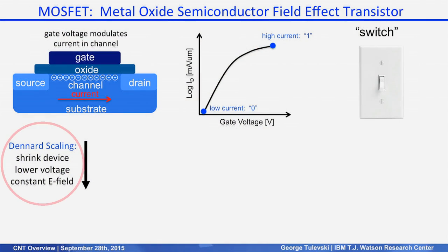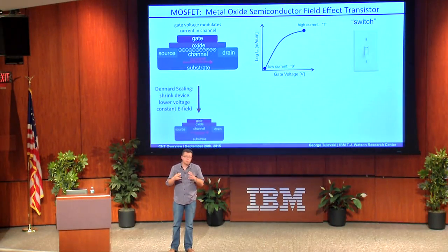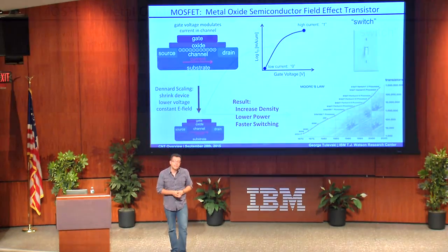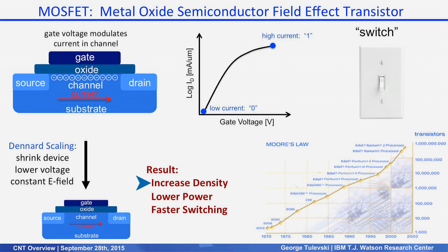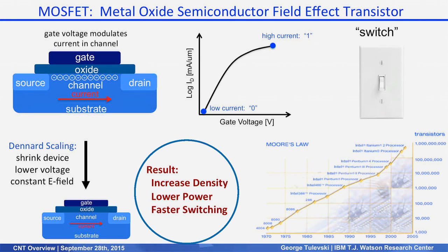What we've been able to do as an industry over the last 30 years is shrink the devices — we call this Dennard scaling. The point is to make the device smaller: we shrink the oxide thickness, the channel length, the channel width, we increase the doping, and this allows us to make a smaller device while keeping the electric field inside the channel constant. What's really beautiful about this is that you not only get more devices — increased density — but because it runs at lower voltage it consumes less power per device, and you also get higher performance because the capacitance is decreased.